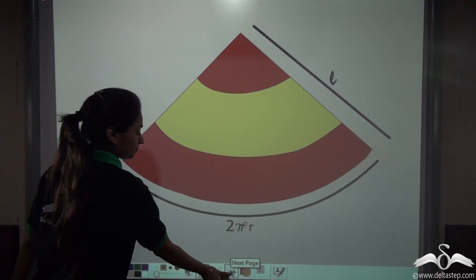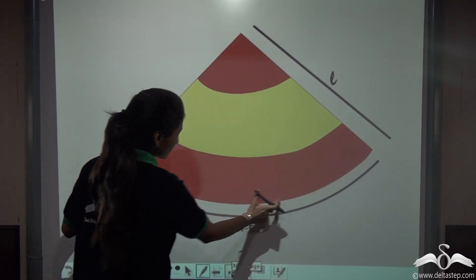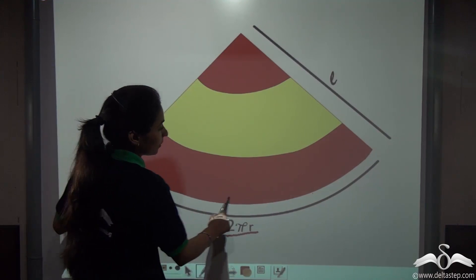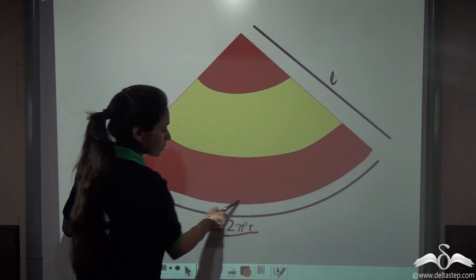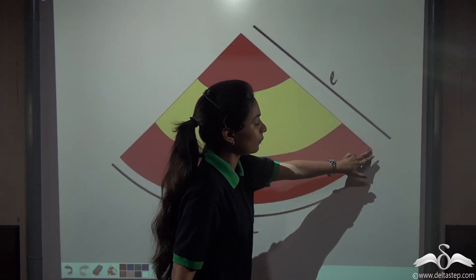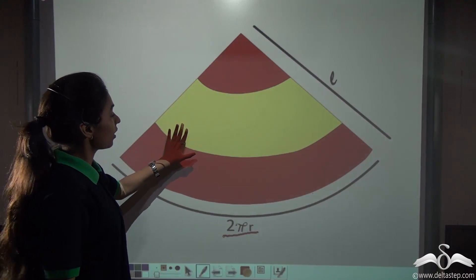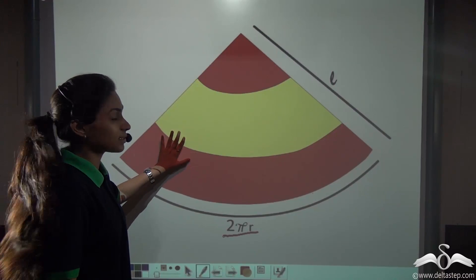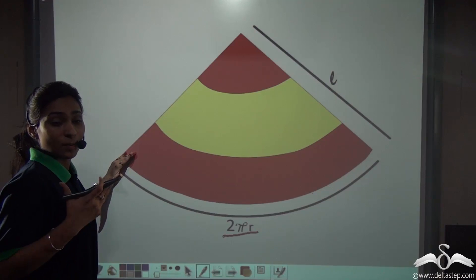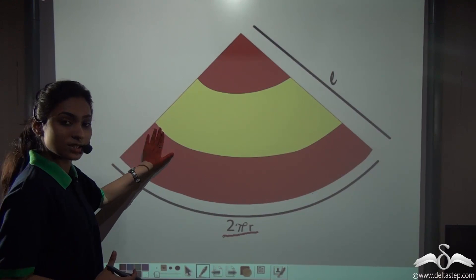Now let me open up this birthday cap and see how much paper is actually required to make this cap. See, we opened this. You can see that we have cut out the cap, and the circular base has circumference 2πr — this is the base that we cut out to make this curved surface area. We know that the distance from the vertex to any point on the circular base is the slant height. Now I need to find out how much paper would I require — this is the curved surface area of this cone.